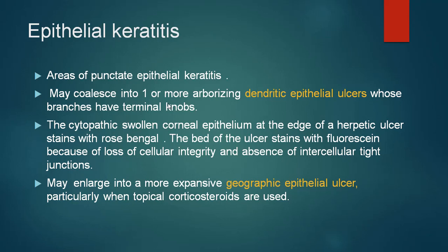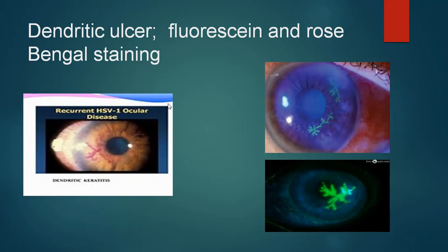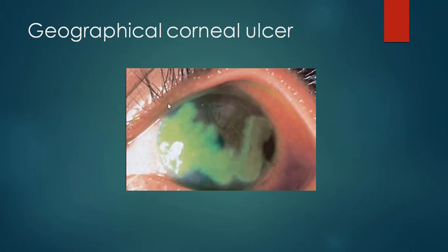Once a patient of epithelial keratitis is exposed to steroids, they may get a large ulcer called a geographic epithelial ulcer or amoeboid ulcer. On these slides you can see the typical dendritic pattern stained with fluorescein and viewed with cobalt blue light on the slit lamp on the right side. On the left side you can see an ulcer stained by rose bengal. The next slide shows a large geographic ulcer where a lot of the epithelium has been lost and there is no longer a dendritic pattern.